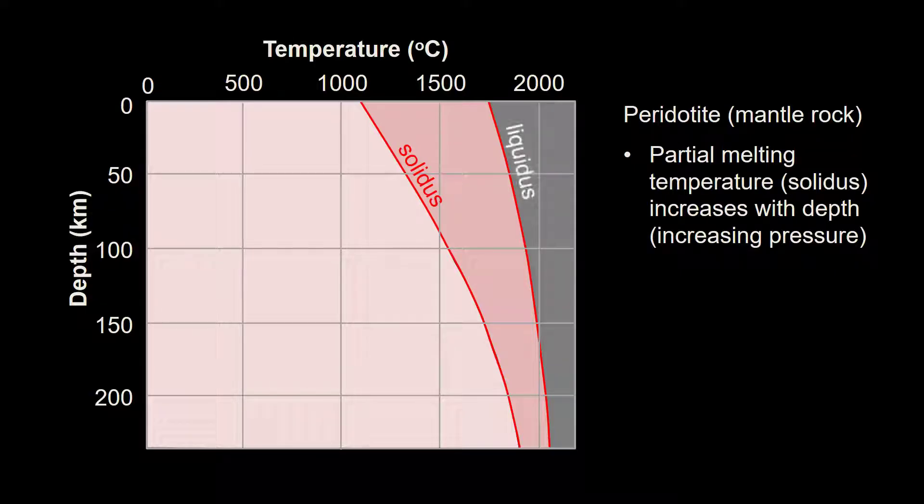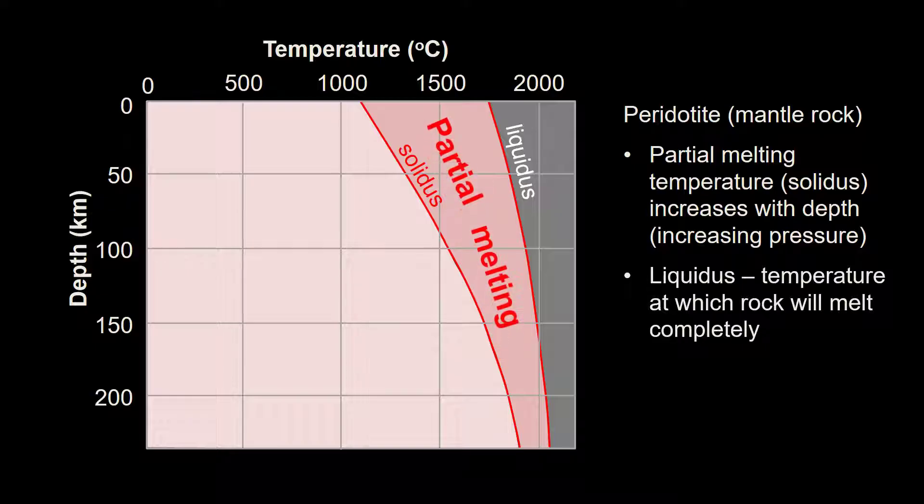The second red line is the liquidus. This represents the temperature needed to completely melt peridotite at different depths. Anything between the two lines represents conditions where partial melting takes place.